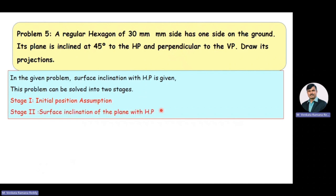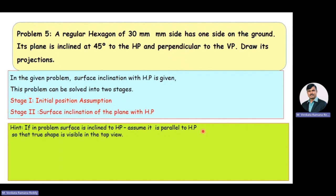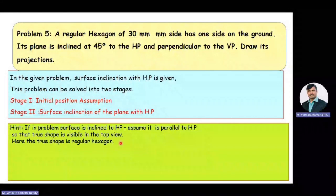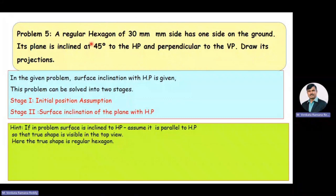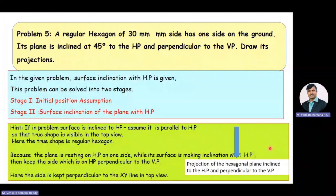The two stages are: Stage 1 — initial position assumption, and Stage 2 — surface inclination of the plane with HP. While drawing Stage 1, we consider the hint: if the surface is inclined to the HP, assume the surface is parallel to the HP so that the true shape is visible in the top view. The true shape is a regular hexagon. Also, the plane rests on one side on the ground, so that side must be kept perpendicular to the XY line in the top view.